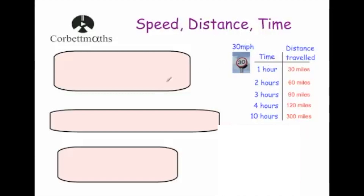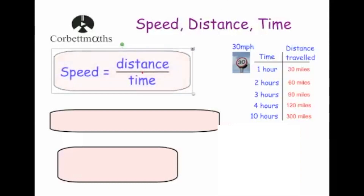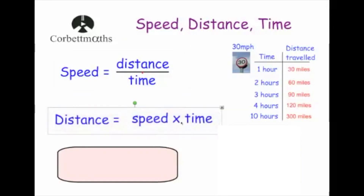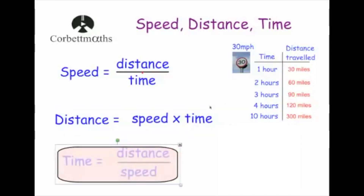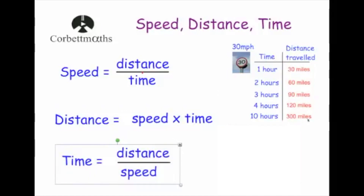As long as the time is in the unit you want the speed in. So our first formula: speed equals distance divided by time. If we didn't know how fast a car was traveling but knew it drove 60 miles in two hours, we'd do distance divided by time to get the speed. Distance equals speed times time — at 30 mph for 10 hours, that's 300 miles. And time equals distance divided by speed — 300 miles at 30 mph gives 10 hours. These are three very important formulas.